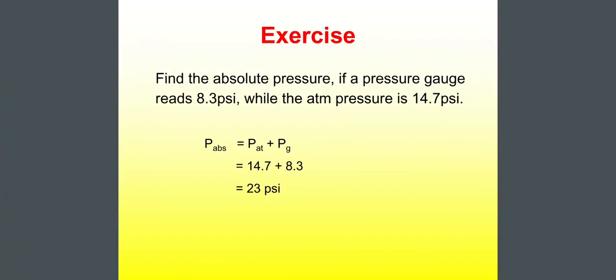There is a question. Find the absolute pressure if a pressure gauge rates 8.3 psi while the atmospheric pressure is 14.7 psi. So, the absolute pressure is equal to P atmospheric then P gauge, that means the gauge pressure. So, atmospheric pressure is 14.7 plus gauge pressure is 8.3. That means our absolute pressure is 23 psi.